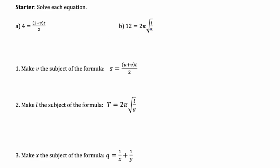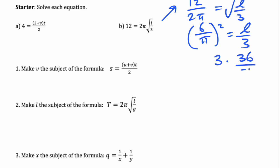First we'll start with a regular solving and just outline the steps we would do here to solve for L. We would divide by 2π, and then to get rid of this square root sign we would square both sides, and then we would multiply by 3 so it would be 3 times 36 over π² is L.